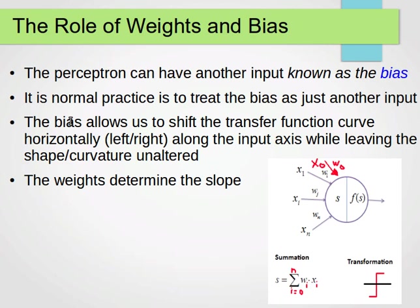Now, the purpose of the bias is it allows us to shift the transfer function curve horizontally to the left or to the right along the input axis while leaving the shape unaltered. If you remember the equation of a straight line before, the bias is like the intercept.